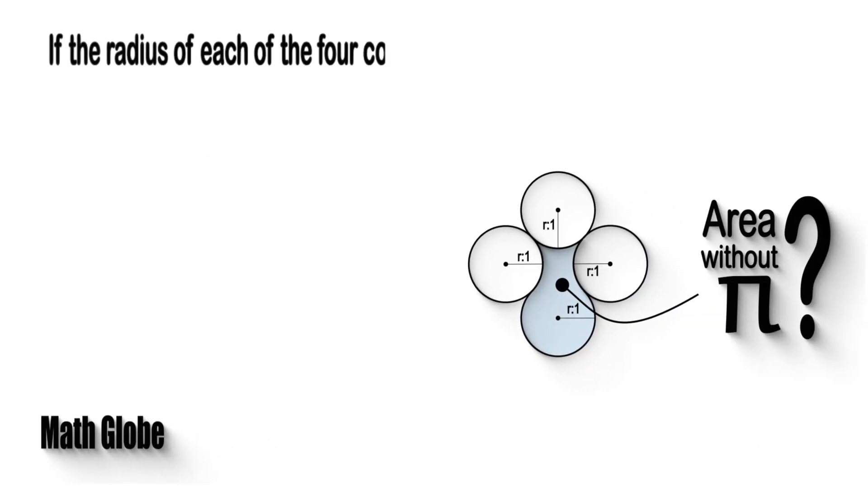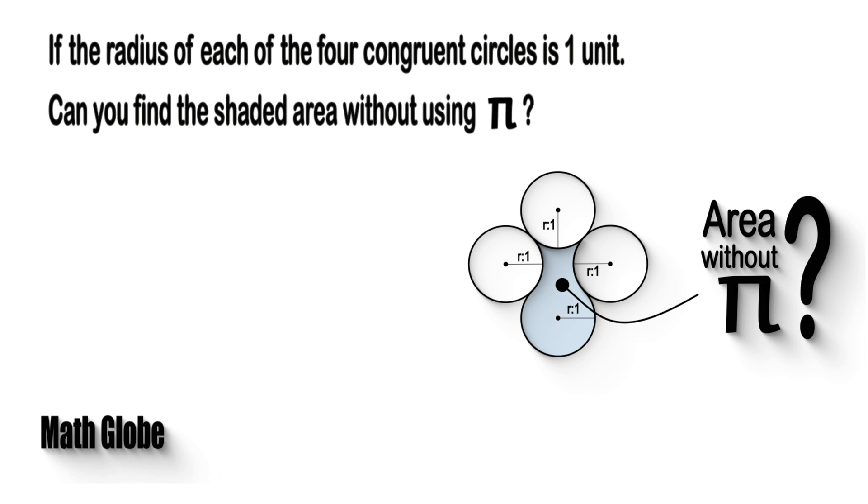If the radius of each of the four congruent circles is one unit, can you find the shaded area without using pi?